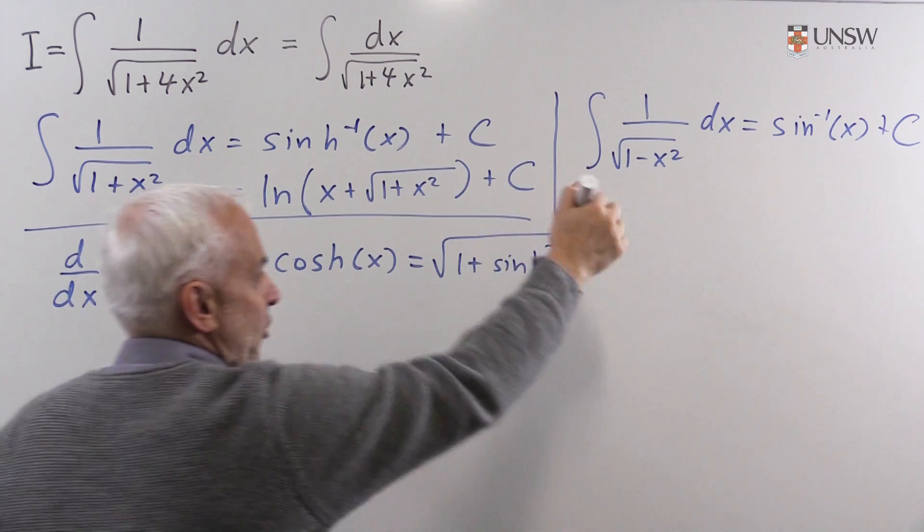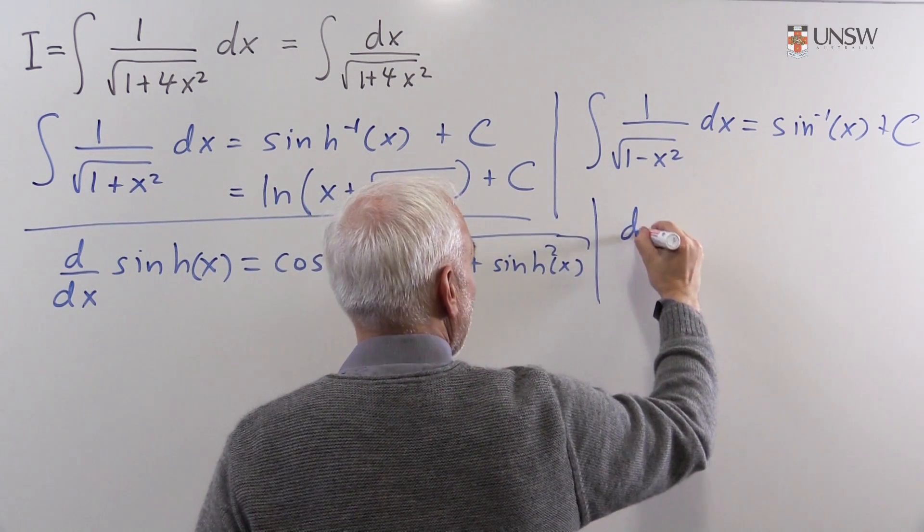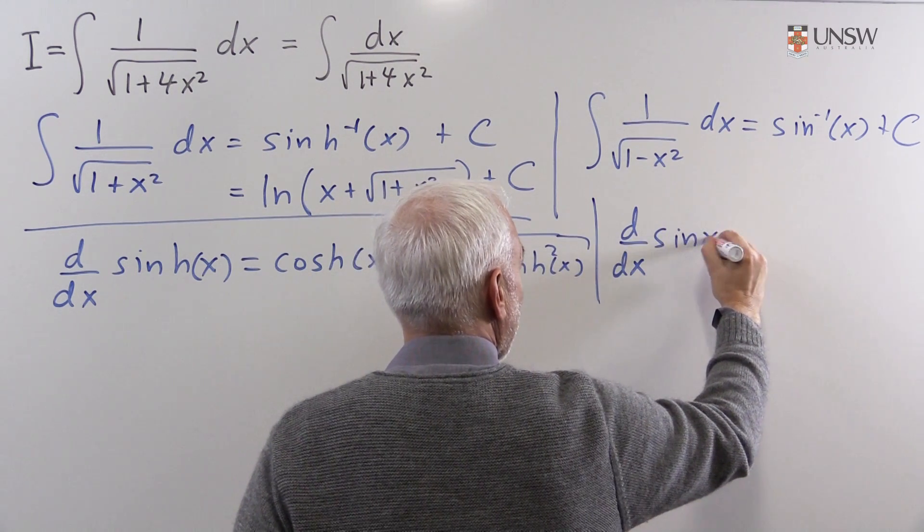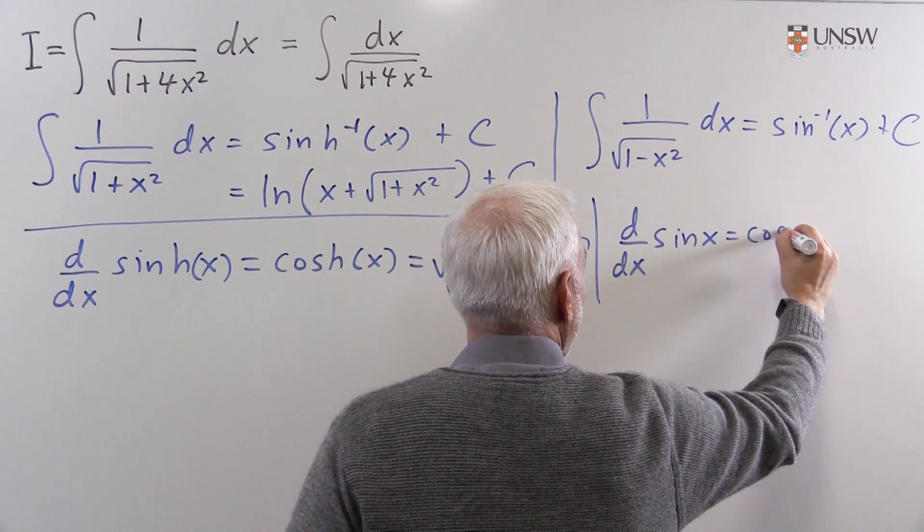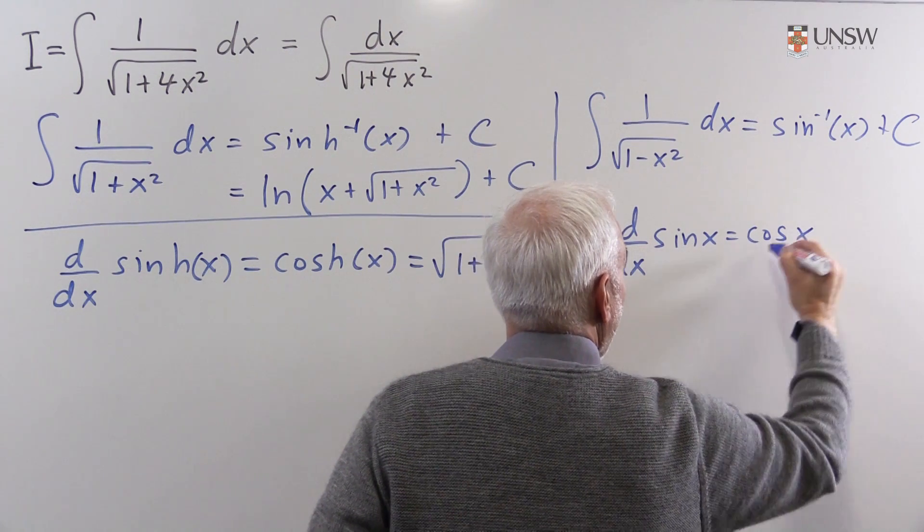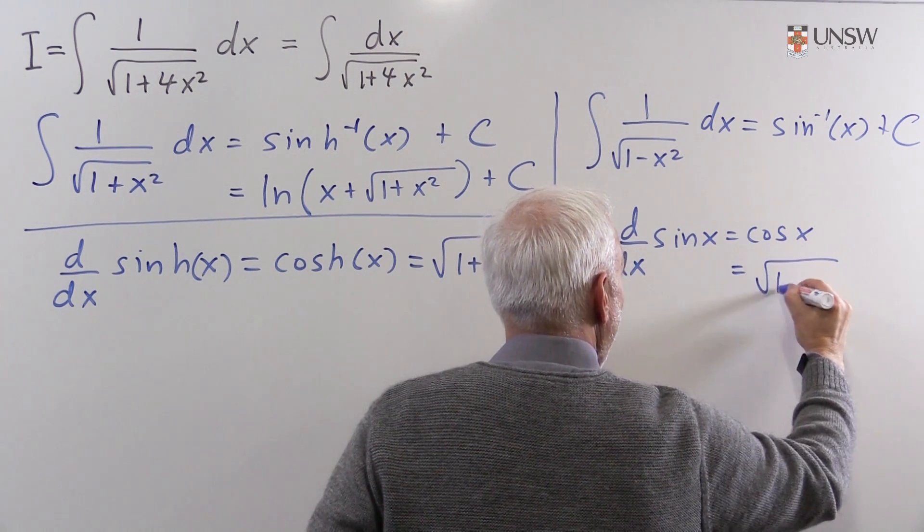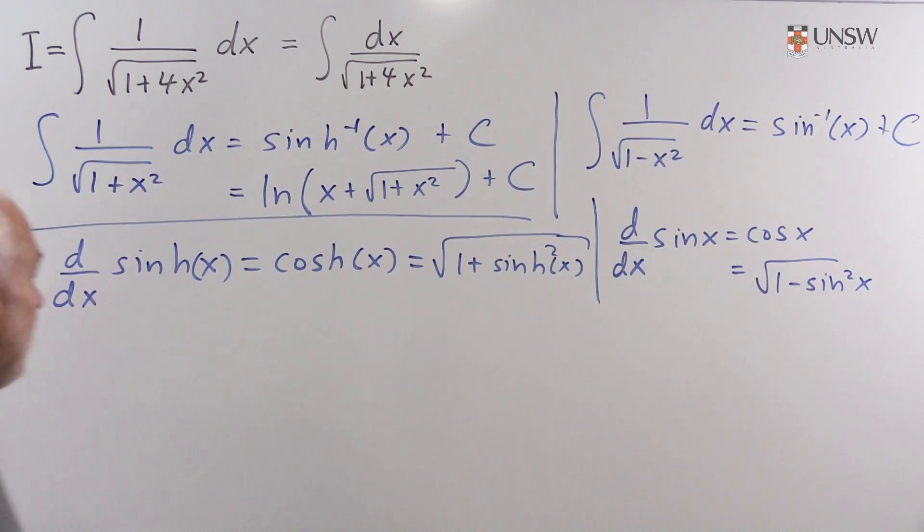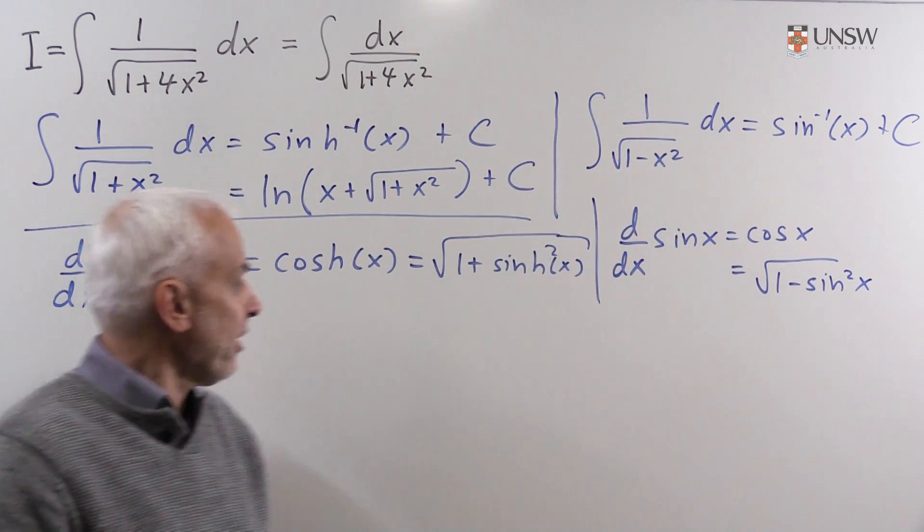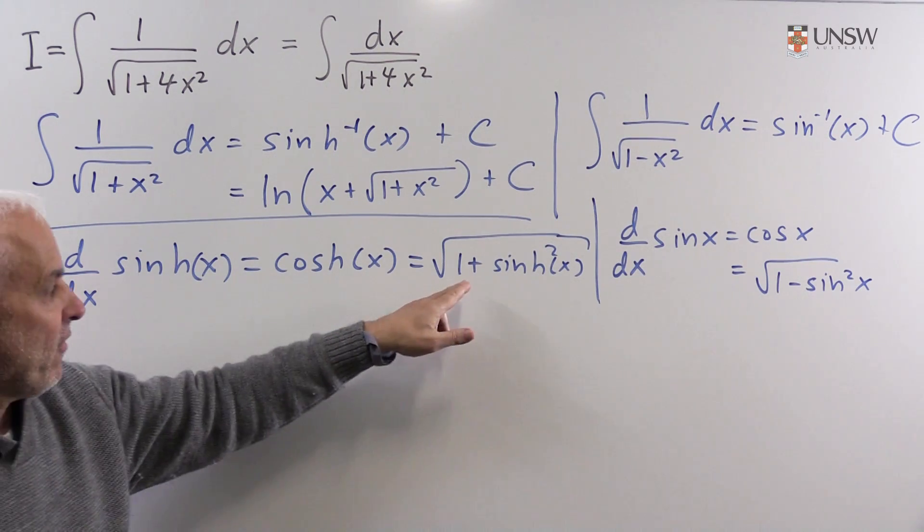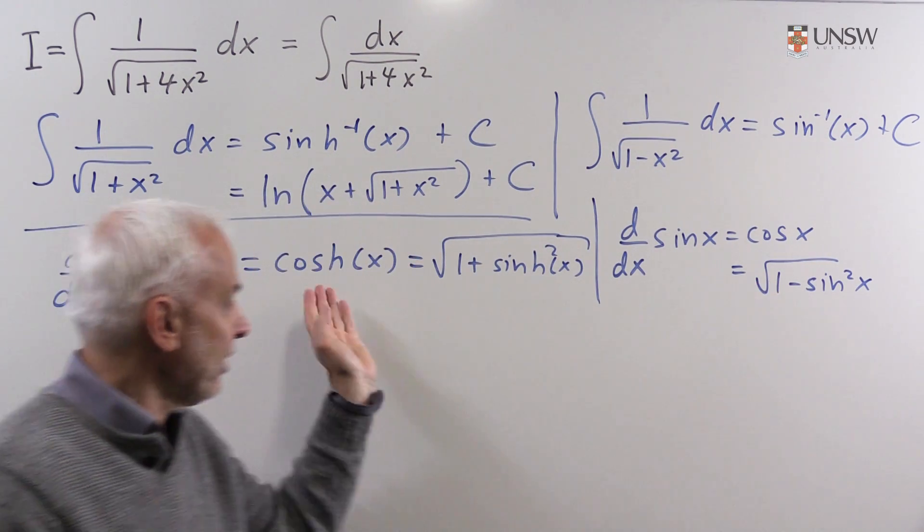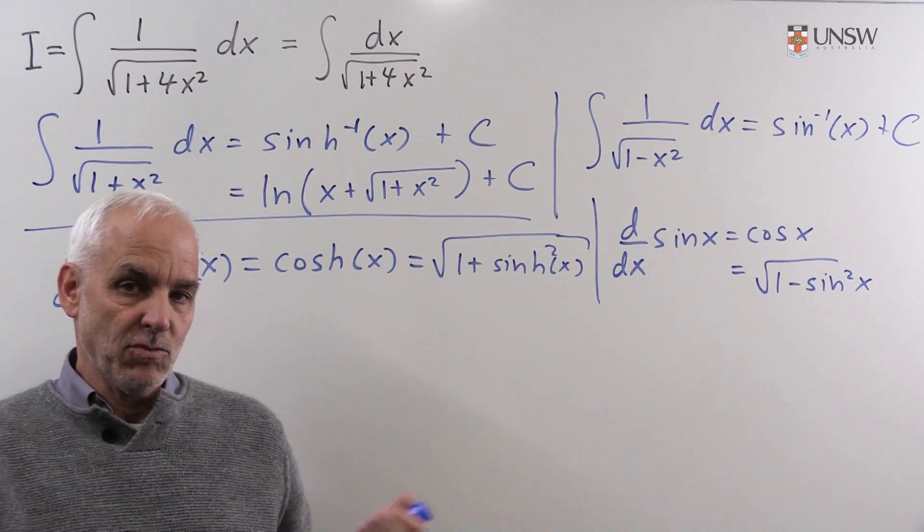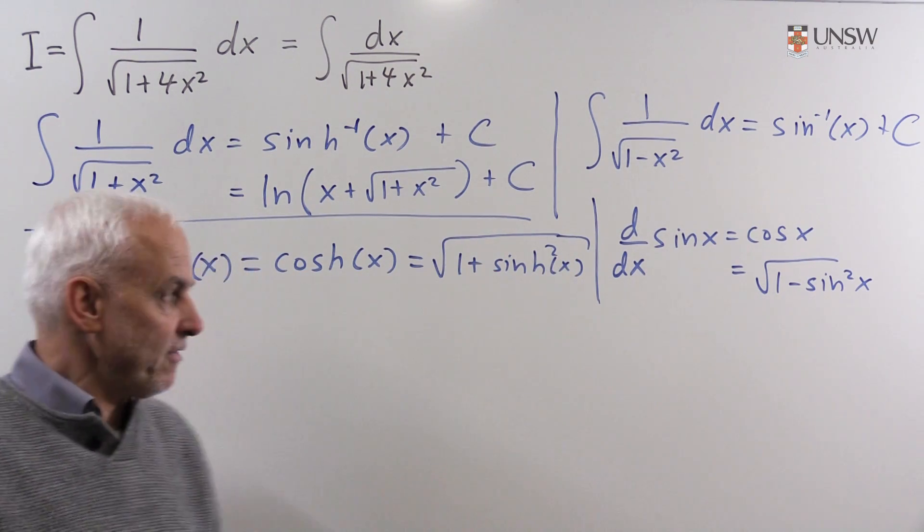And so you can think of the plus signs and the minus signs here as somehow being natural reflections of the plus signs and the minus signs in regard to these identities with the hyperbolic and circular functions.